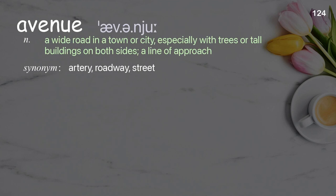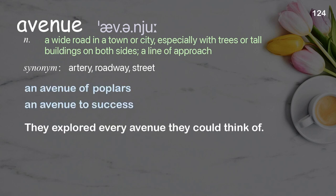Avenue: a wide road in a town or city, especially with trees or tall buildings on both sides; a line of approach. Examples: an avenue of poplars, an avenue to success. They explored every avenue they could think of.